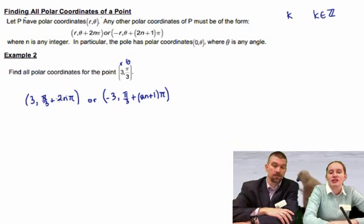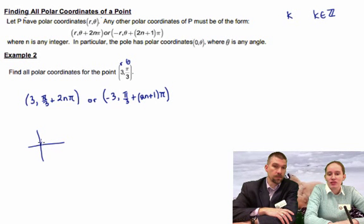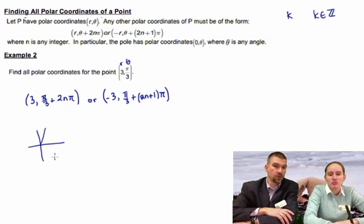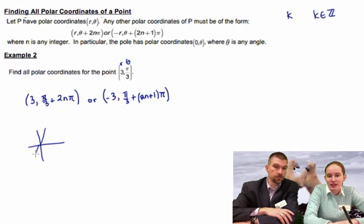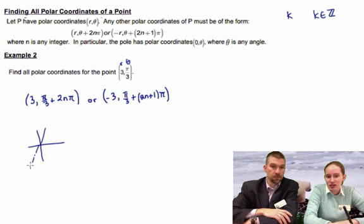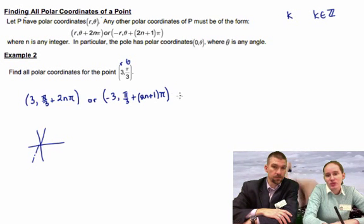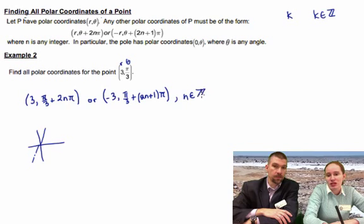If we have π/3, that's here. The first form is just having us rotate around by 2π increments — 2π, 2π, 2π. The second form takes us to the opposite side with the negative R, giving us those angles over there. And n still has to be an integer throughout.